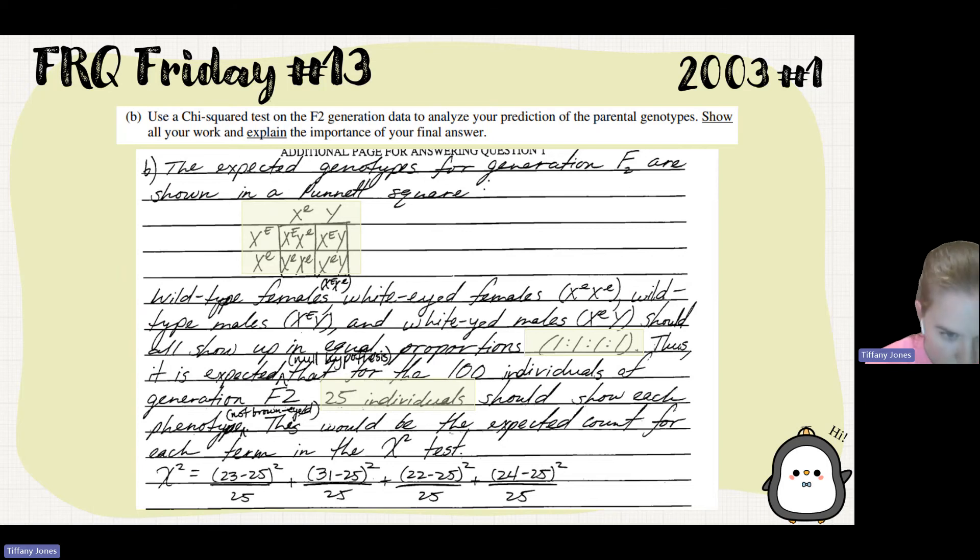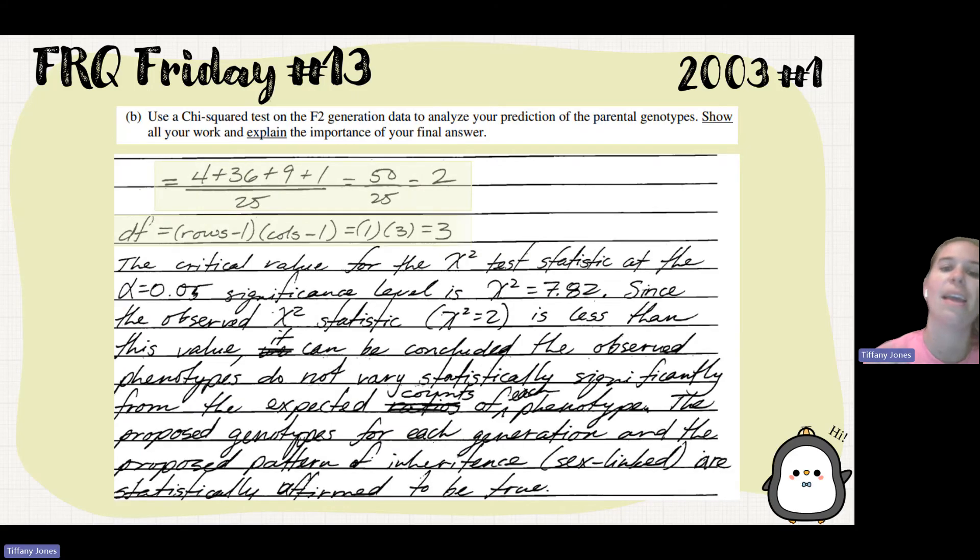This would be the expected count for each term in the chi-square test. They then show you some math, and then they show you where their degrees of freedom come. That is a statistics, row minus one, columns minus one. And I'm going to be honest with you, I don't know if I can explain it to you because I don't understand that one myself. So if someone wants to comment and tell us how we got the rows minus one and the columns minus one and how that tells us our degree of freedom, that would be amazing. The critical value we got was 0.05 significance and our chi-square was 7.82. So since our observed statistic of two is less than this value, the observed genotypes do not vary statistically significantly from the expected counts of each genotype.